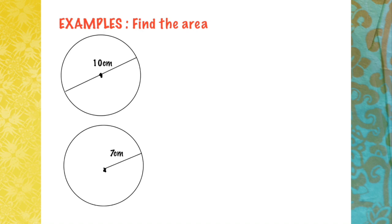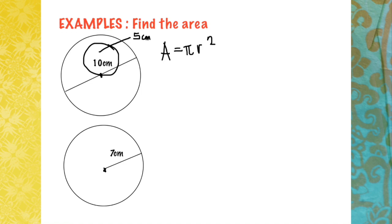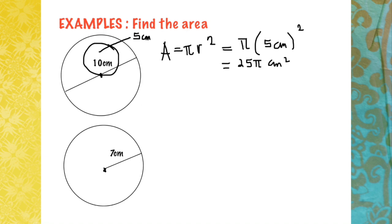Now let's find the area of the following circles. In the first example, you are given a diameter. Since the formula for area is A = πr², we need half of our diameter. Half of 10 is 5 cm, which becomes our radius. Substituting, we have π times 5² — that's 25π cm² as the exact value, or approximately 78.54 cm² as the estimated value.